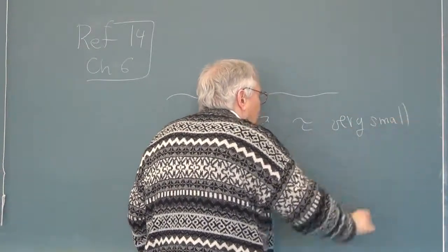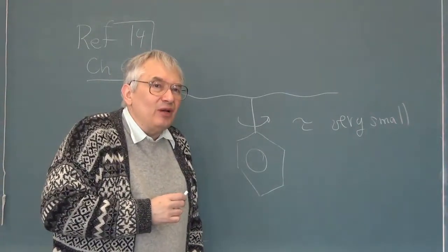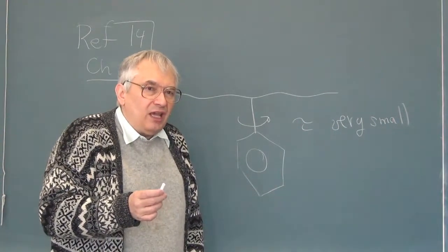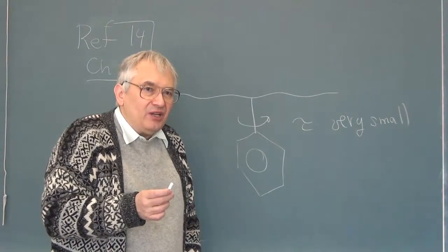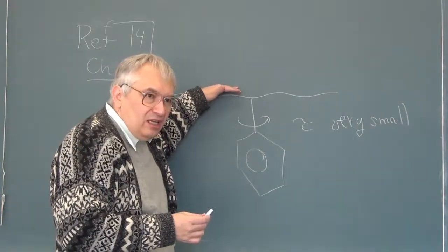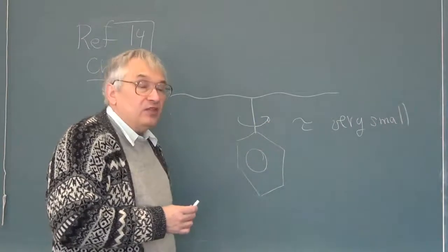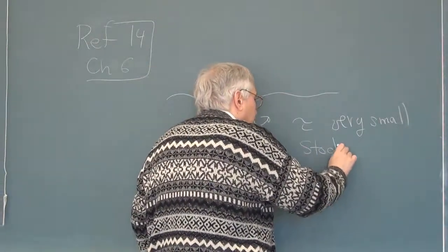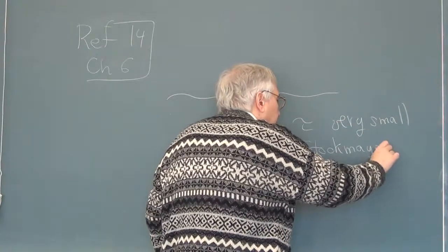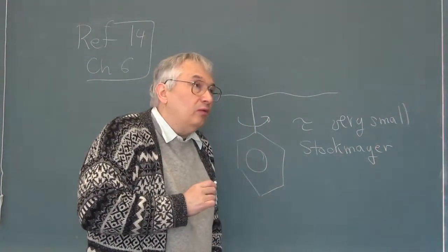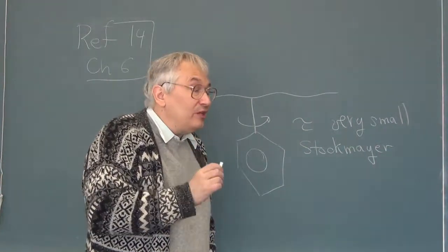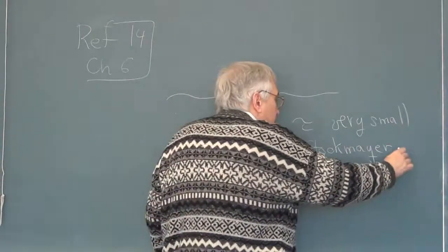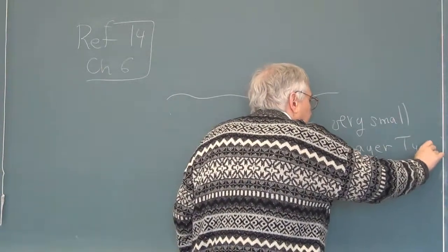What do I mean by very small? Picoseconds — though there might be other answers. This is the fastest sort of process you can get. You might ask whether you can get similar processes in the main chain, and in general not very easily because of organic structure. Stockmeyer was a polymer physicist/chemist of about half a century ago. This discussion originally refers to dielectric relaxation, which is the next chapter. This is what is called Type C relaxation.